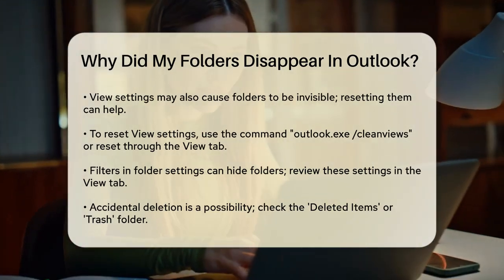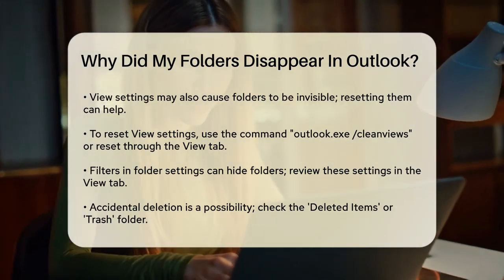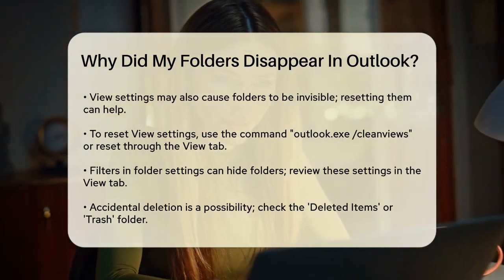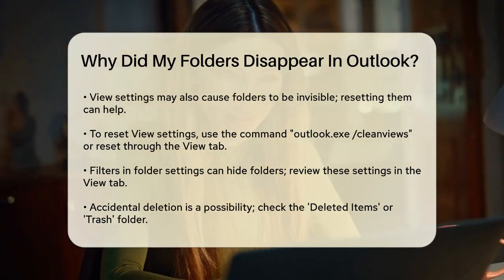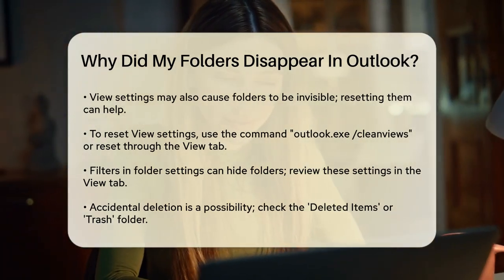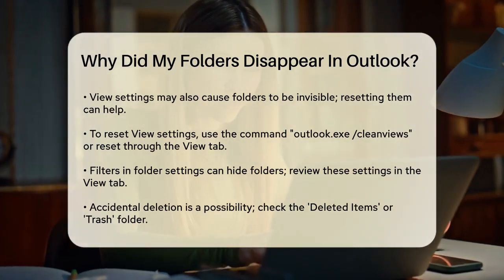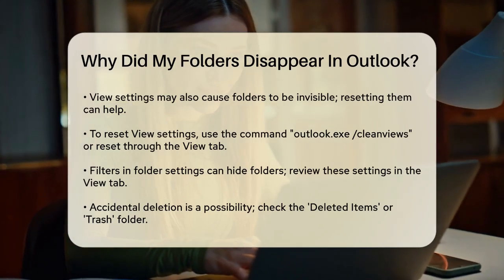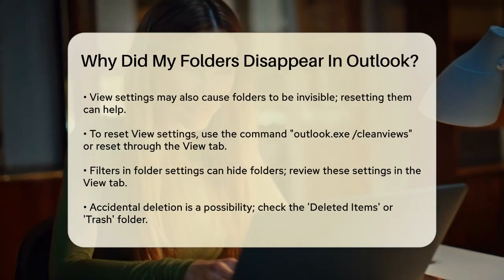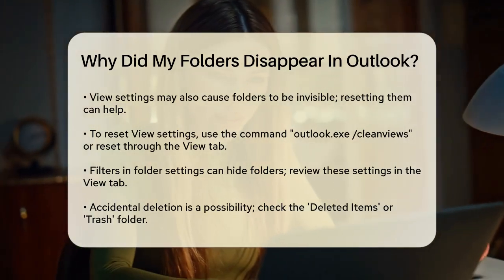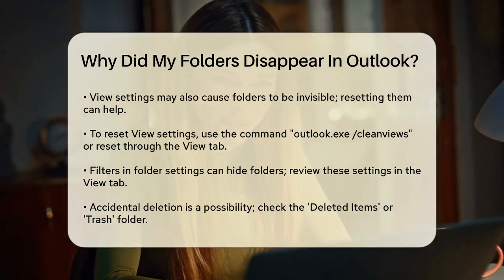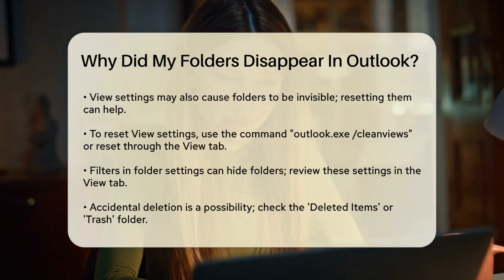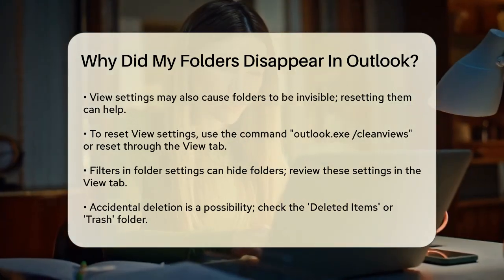Filters can also cause folders to disappear from view. Check the filtering options in your Outlook folder settings. Go to the View tab, select View Settings, and then Filter. Review the tabs like Tasks, More Choices, and Advanced to see if any filters are hiding your folders.